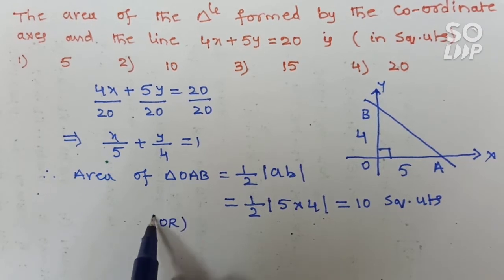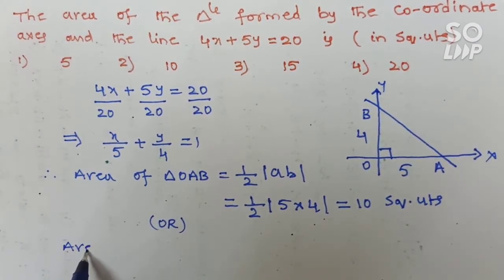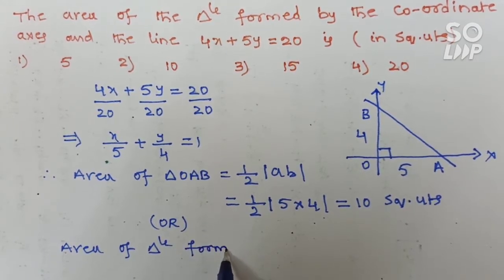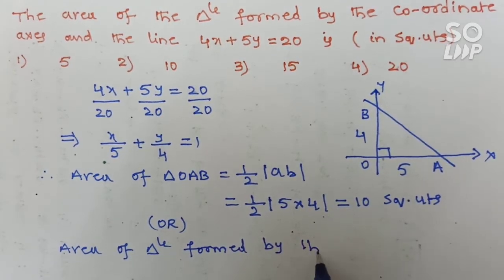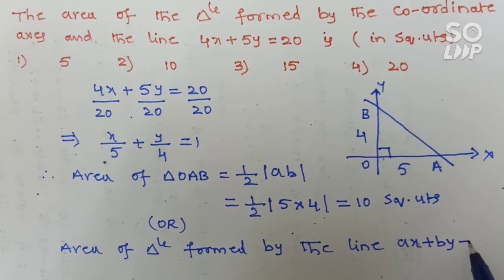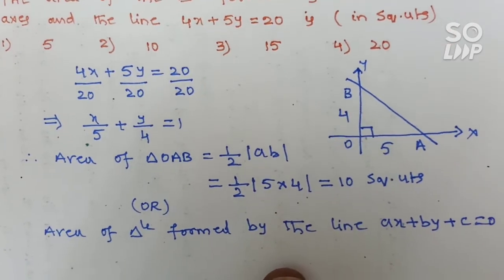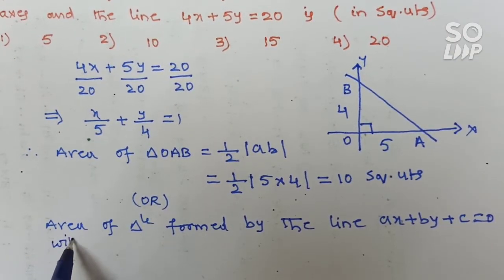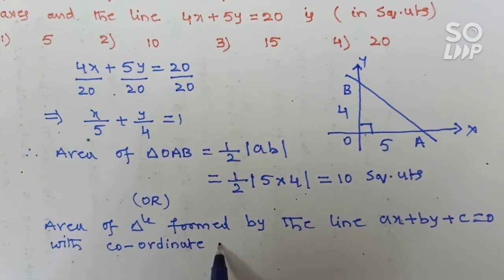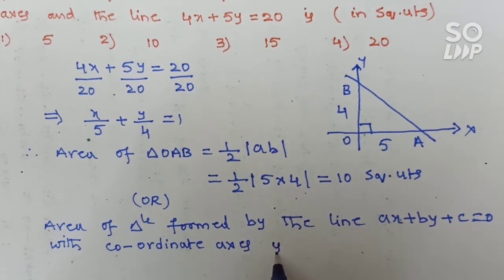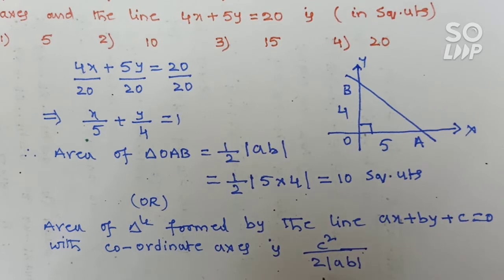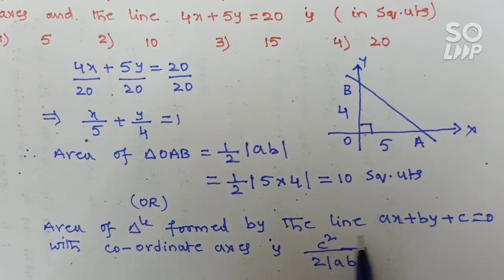The area of the triangle formed by the line Ax plus By plus C equals 0 with the coordinate axis is given by the formula: C² divided by 2 into modulus of A times B. Here A and B are the x-coefficient and y-coefficient, and C is the constant.